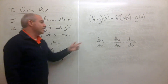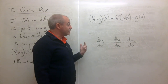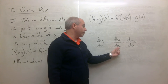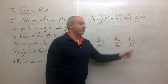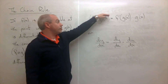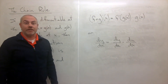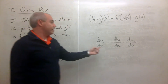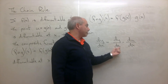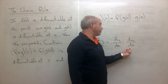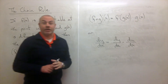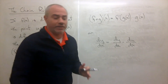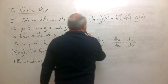Another way of writing this — and perhaps more helpful at times — is that the derivative of y with respect to x equals the derivative of y with respect to u times the derivative of u with respect to x. This says the same thing as above, because u is g of x: take the derivative of y with respect to g of x, then multiply by the derivative of g with respect to x.